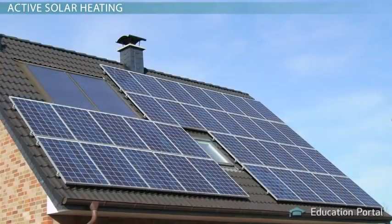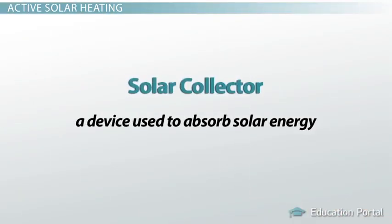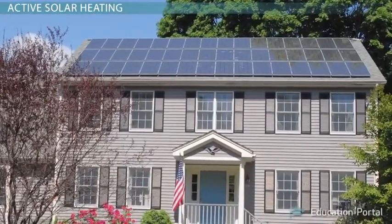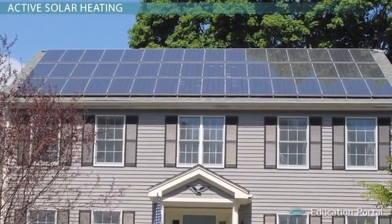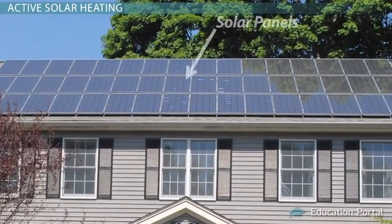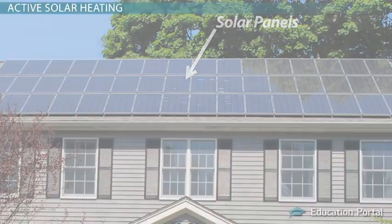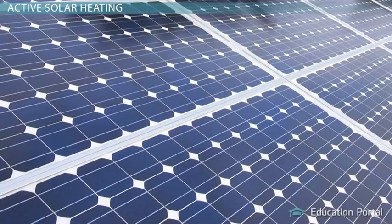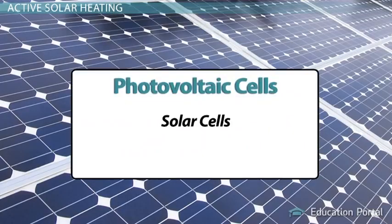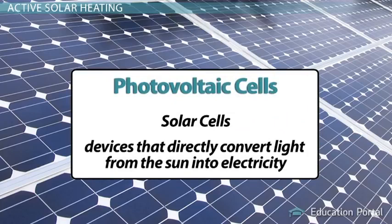For active solar heating, you will need a solar collector, which is a device used to absorb solar energy. Solar collectors can be simple designs, but you likely think of solar collectors as the solar panels found on rooftops of homes or other buildings. Solar panels are typically composed of photovoltaic cells, or solar cells, which are devices that directly convert light from the Sun into electricity.